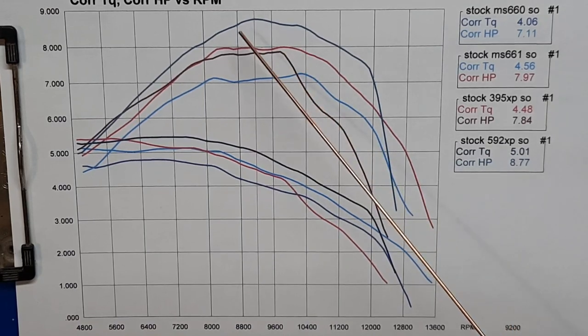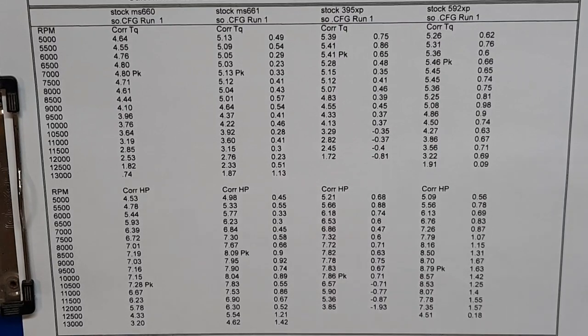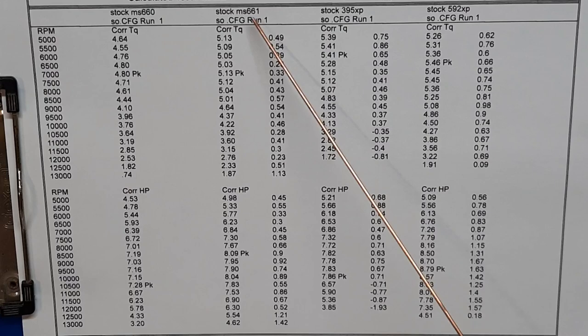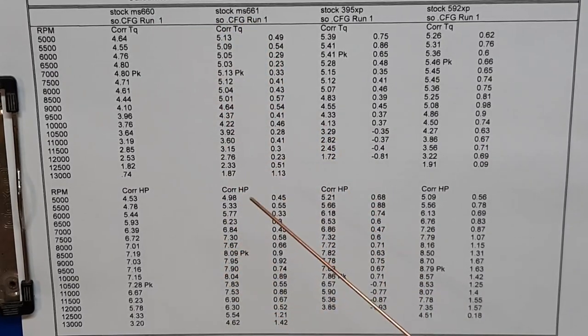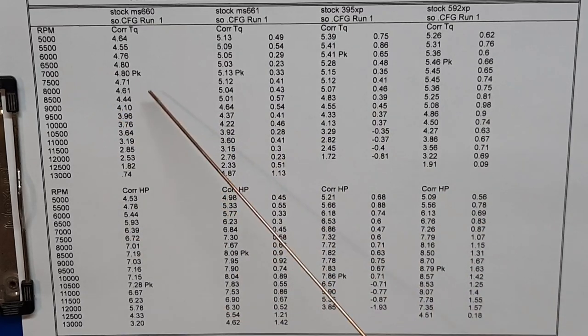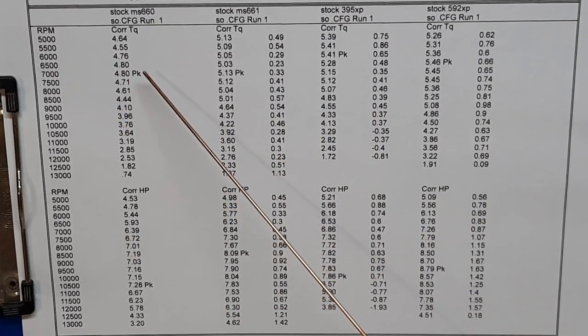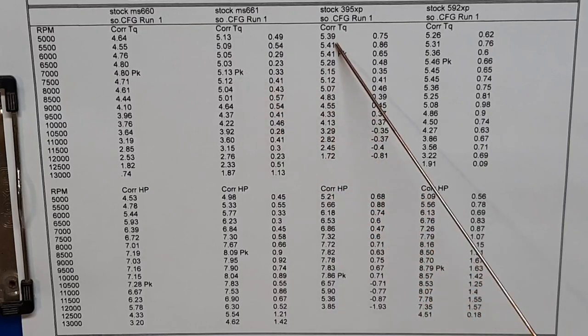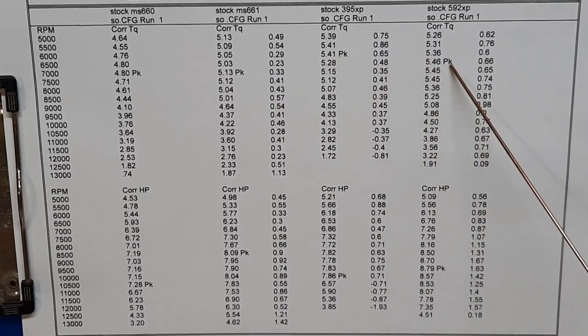All right, here it is spelled out in number fashion. 592, 395, 661, 660. That's what these columns show. The horsepower is on the bottom, torque's on the top. Where it says PK, that's the peak. So 4.8 foot pounds is the peak torque that the 660 did, 661 is 5.13, 395 is 5.41, 592 is 5.46. Those are all the peak foot pounds of torque that was measured.